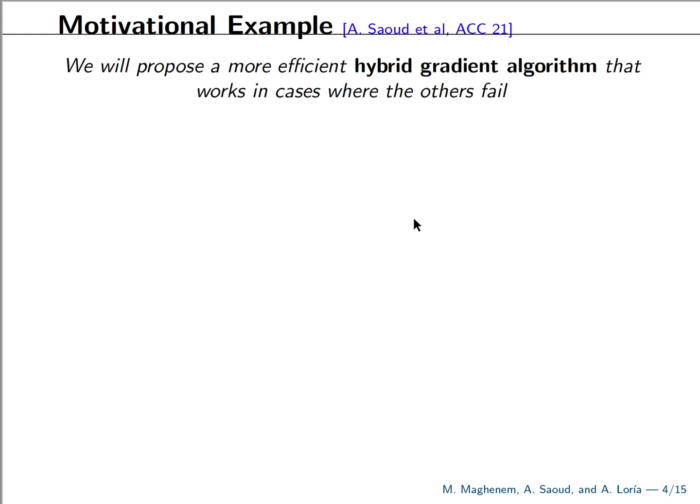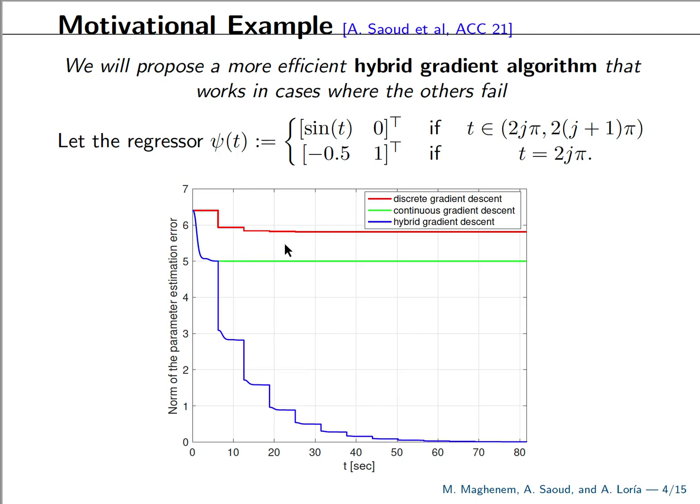Now, the first message of this talk is that we are able to propose a more efficient, what we call, hybrid gradient algorithm that works in cases where the aforementioned algorithms do not. And for this, we introduce this simple example where we have here a regressor signal that has a continuous time evolution on some intervals of time, but also at the end of each interval, it has a discrete evolution, so it instantaneously jumps and changes value. So when we view this regressor signal as a continuous time signal, meaning that we ignore what happens at isolated points, we use the continuous time gradient algorithm and we obtain the curve in red for the estimation errors. We can see that we don't solve the estimation problem.